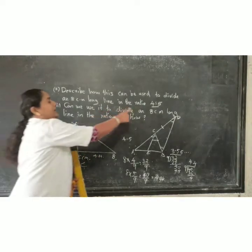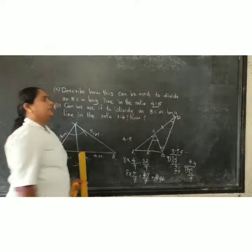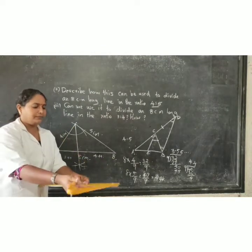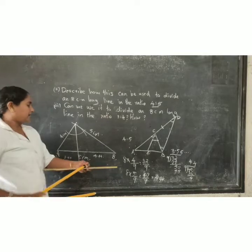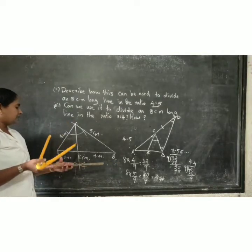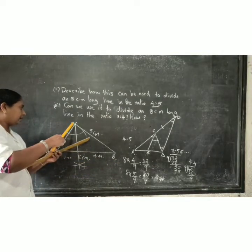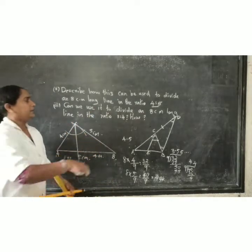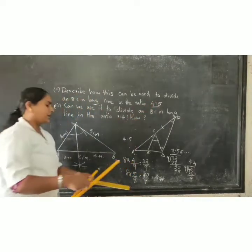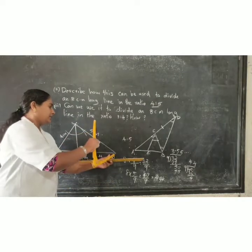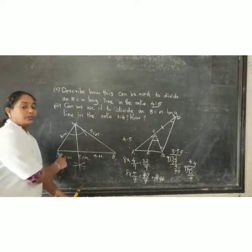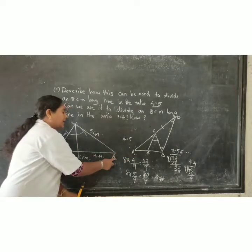Then divide it in the ratio 4 is to 5. Therefore, take in compass 4 cm diameter and cut an arc. Fix at A and cut an arc. Then again, take 5. Take in compass 5, fix at B, cut an arc. Therefore, first step, we draw A, B, C. You all want to draw first step triangle A, B, C.